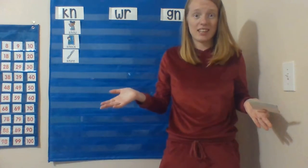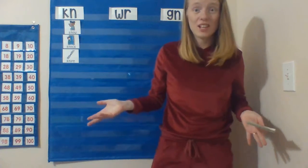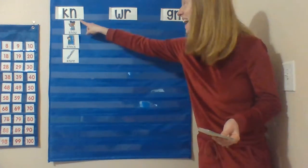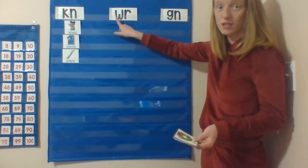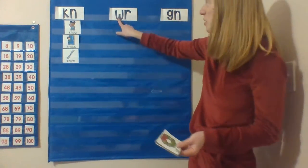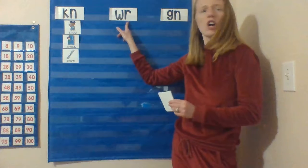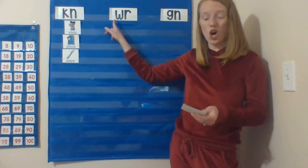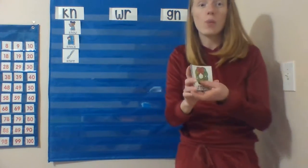But the ninja needs some ninja friends! The K has friends W and G. When W and R are together, you do not hear the letter W because it is also a ninja, in words like wreath.